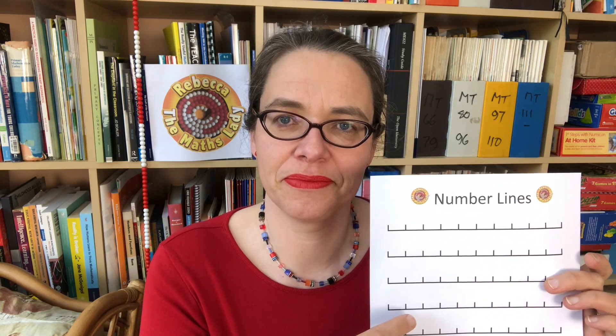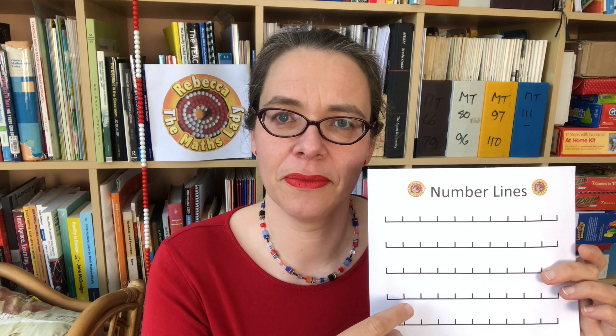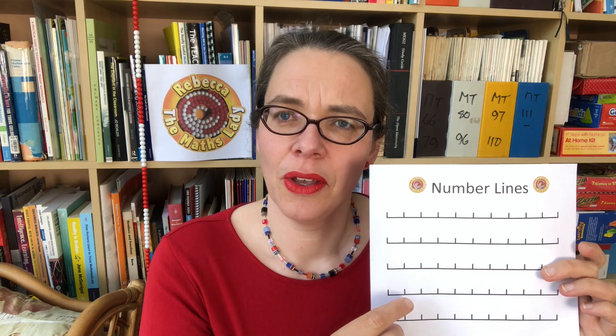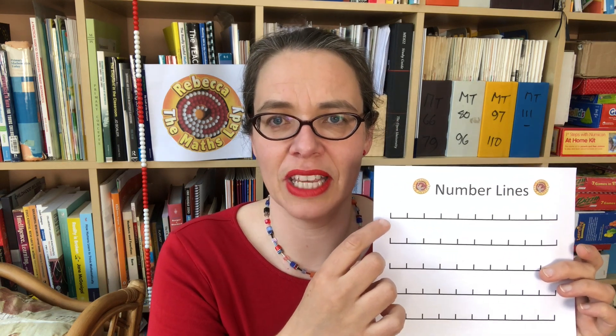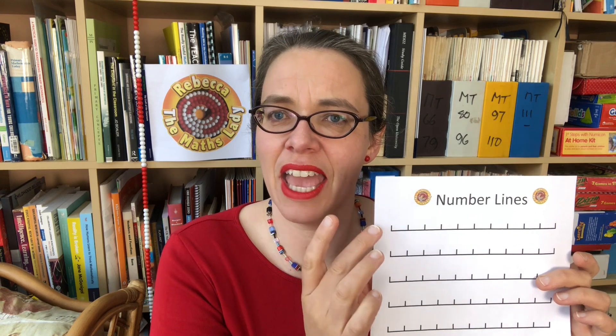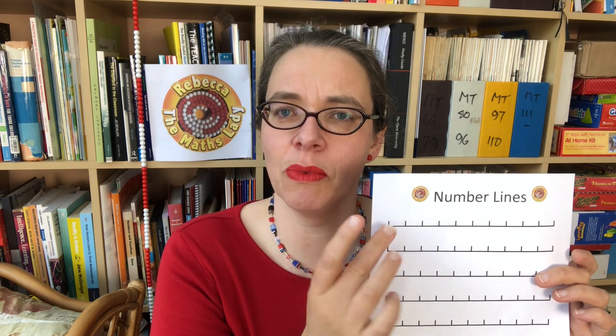The reason it's tricky is: how many numbers are there on this number line? It turns out there are actually 11 numbers on it. There are 10 spaces and it's 10 difference between the smallest and the largest number if we're counting in ones, but there are 11 numbers on it.